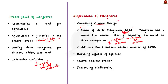Second, mangroves help cushion the blow of cyclones by reducing their speed due to their dense nature, reducing impact in coastal areas. Third, mangroves play an important role in controlling coastal erosion — their tight network of roots prevents the coast from storm surges, currents, waves, and tides. Finally, mangroves help conserve biodiversity by providing habitat for a large number of birds, fish, invertebrates, mammals, and plants.